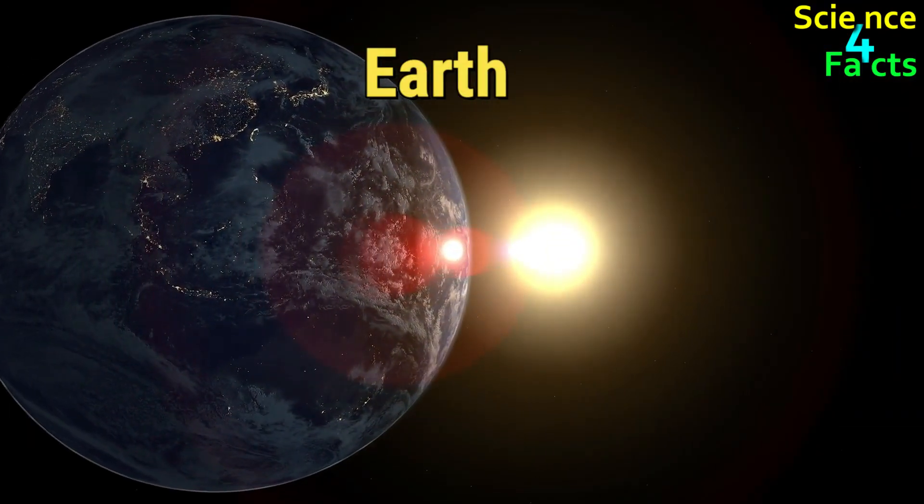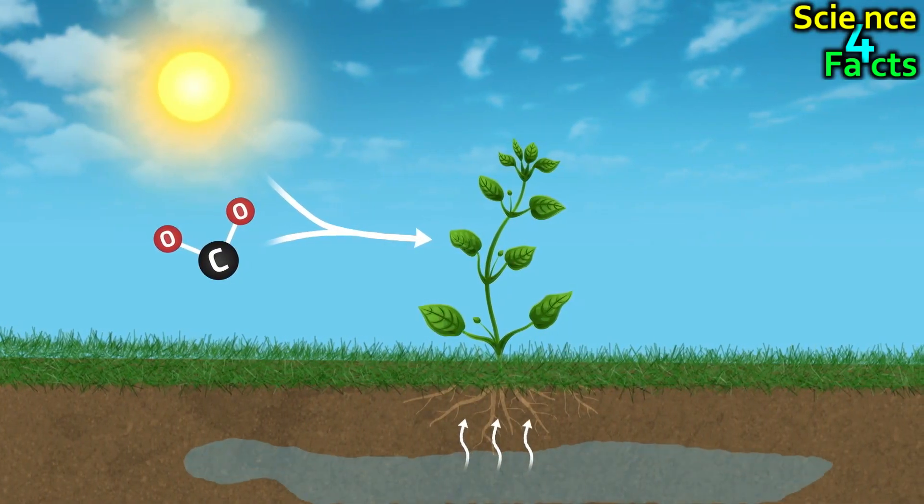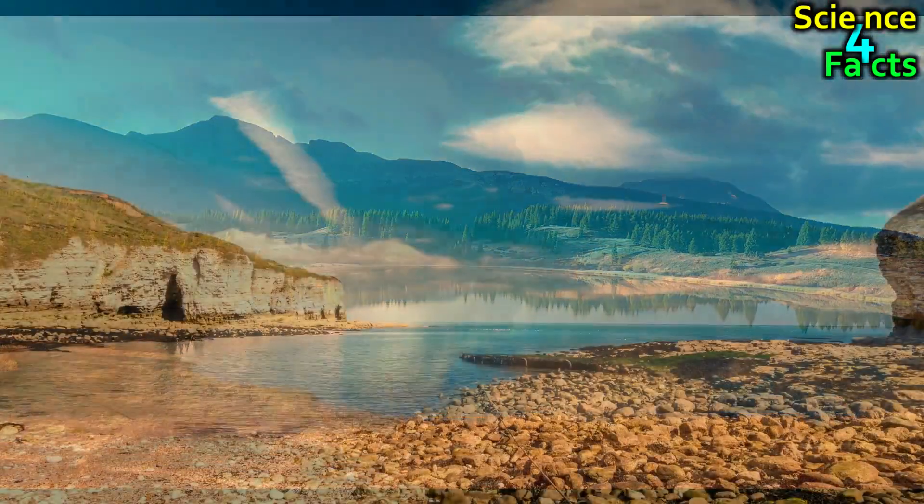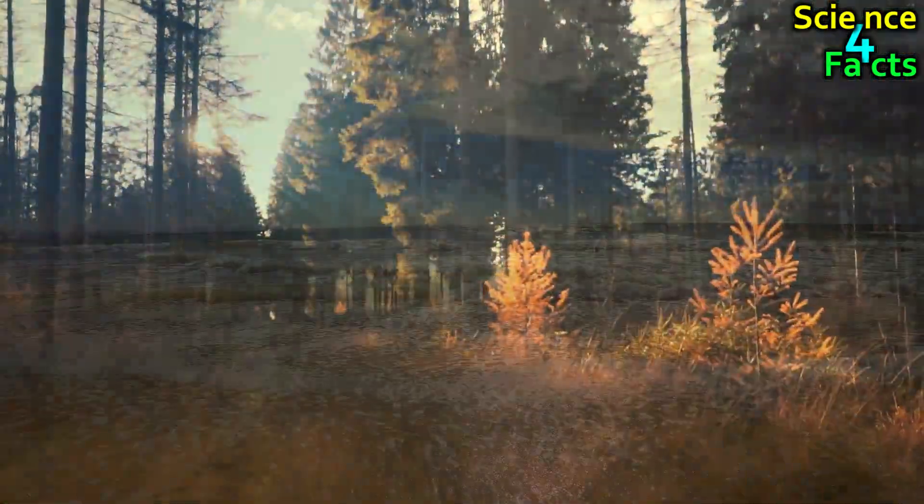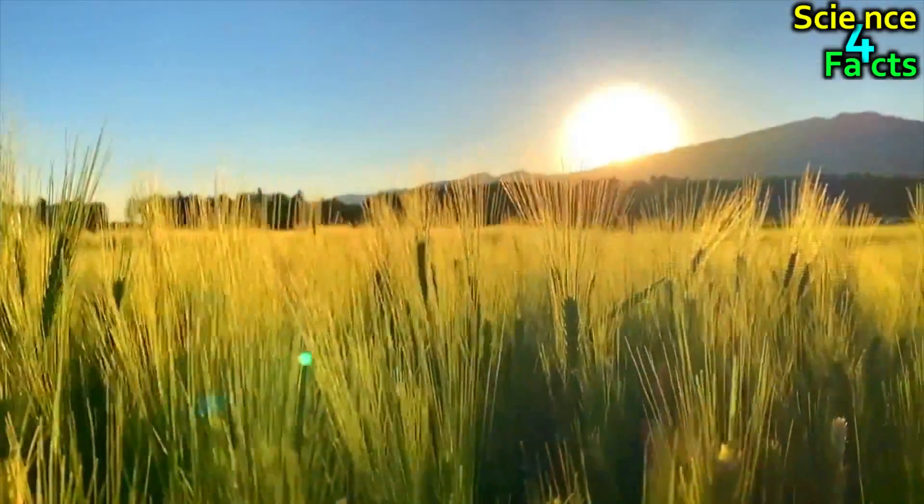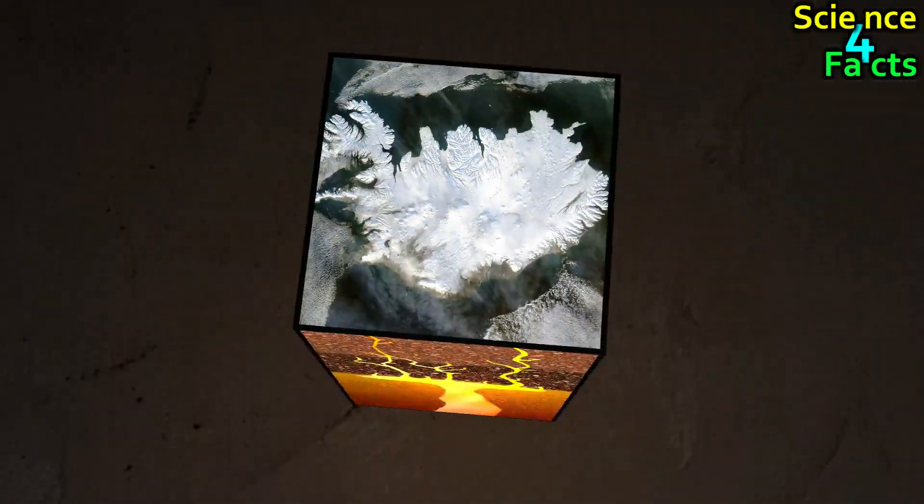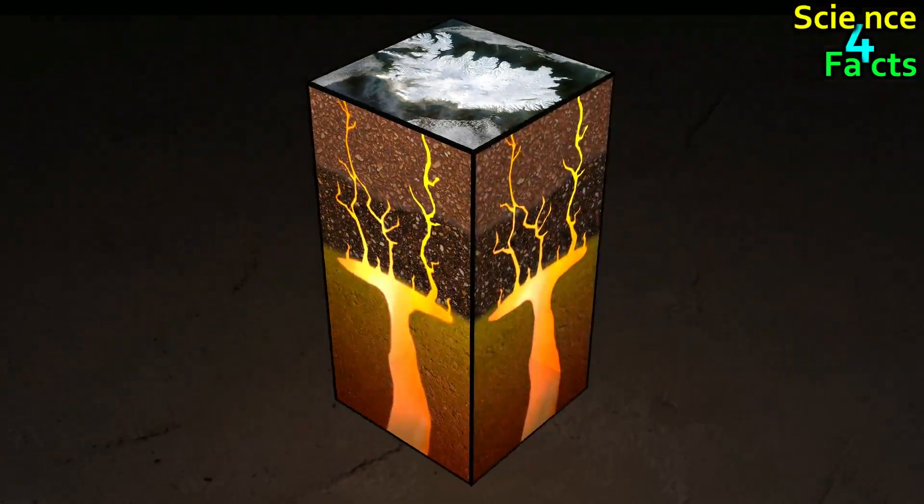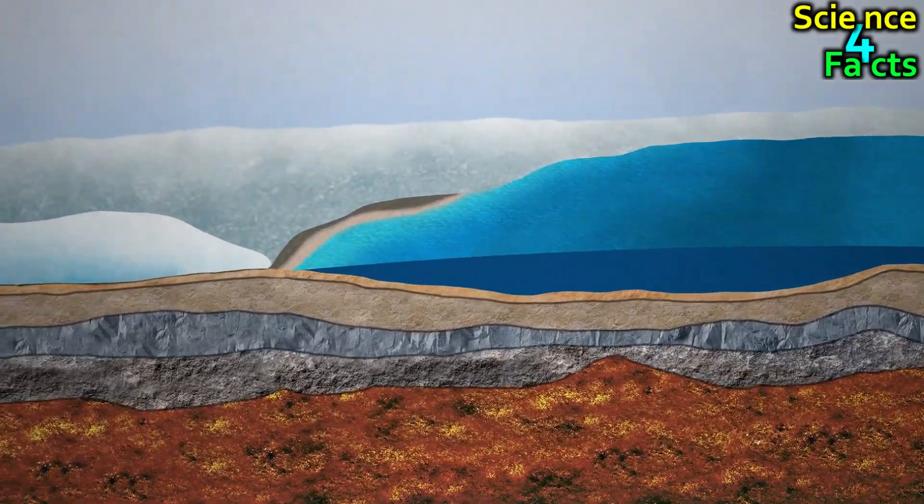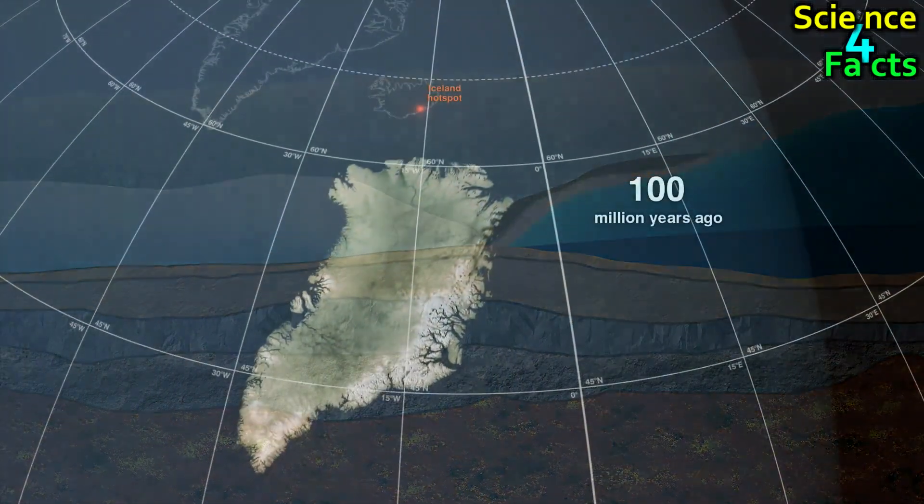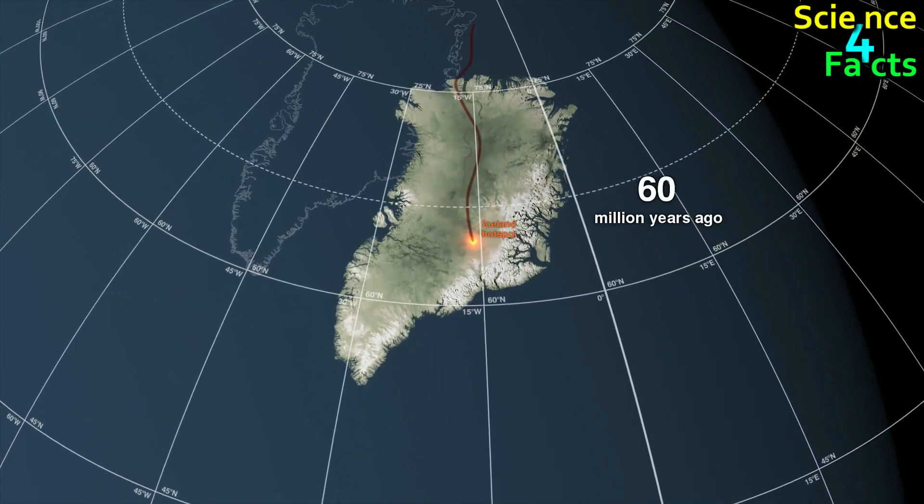Earth is the third planet from the Sun and the only known planet in the universe that supports life. It has a diverse range of landforms that include mountains, valleys, deserts, forests, and oceans, all of which contribute to the planet's unique ecosystem. The surface of Earth is covered in a thin layer of solid rock, which is broken up into several large plates that float on top of the planet's molten mantle. The movement of these tectonic plates is responsible for many of the planet's most striking landforms.